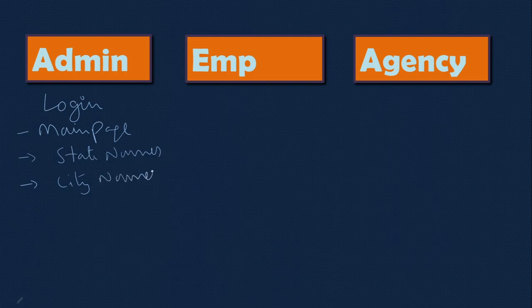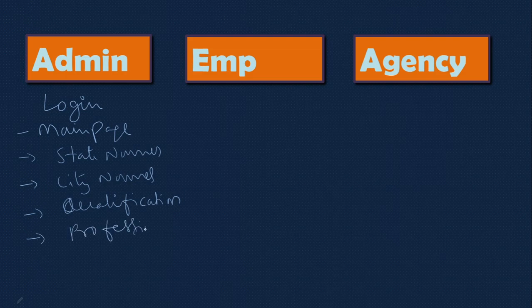Then qualification - this qualification is for employees as well as the enrolling members. Next one is profession - what is the profession of the people. Next is employee details - you need to create the employee here, because this is an organization and the admin has to create the employees so that employees can be able to log in.